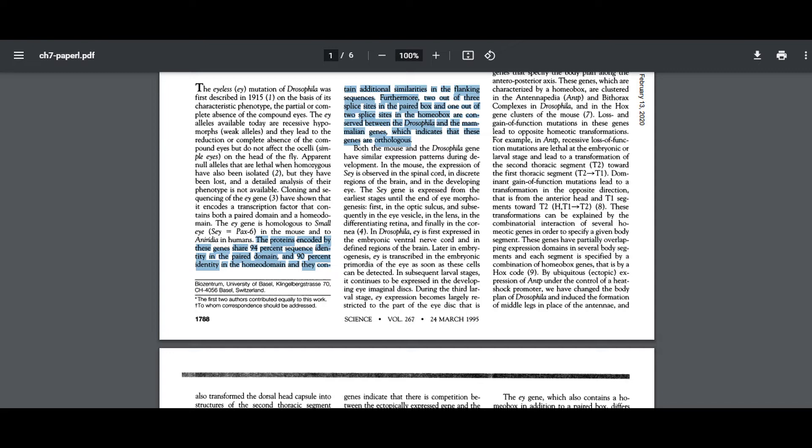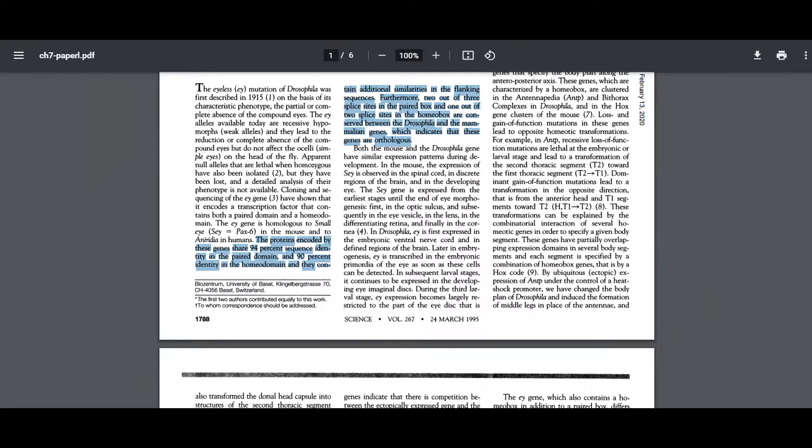Furthermore, two out of three splice sites in the paired box and one out of two splice sites in the homeobox are conserved between the Drosophila and the mammalian genes, which indicates that these genes are orthologous, close quote. For reference, paired domains and homeodomains are the parts of the transcription factor that bind to DNA, functioning as repressors or activators. Additionally, the mouse and fly genes have similar expression patterns during development.